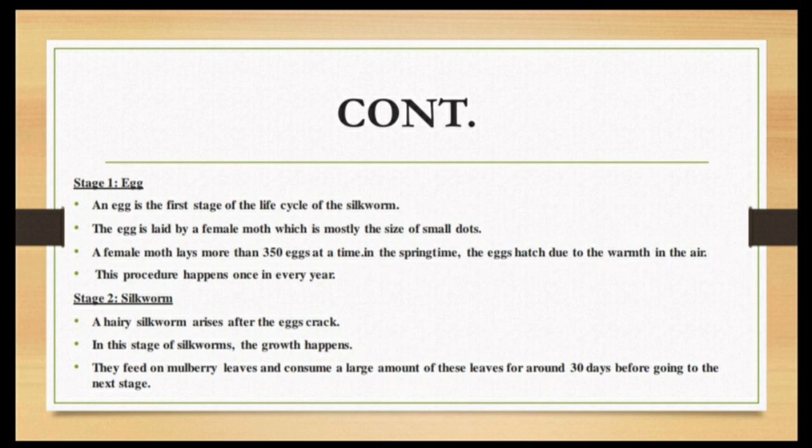Stage 2: Silkworm. A hairy silkworm arises after the eggs crack. In this stage, growth happens. They feed on mulberry leaves and consume a large amount of these leaves for around 30 days before going to the next stage.